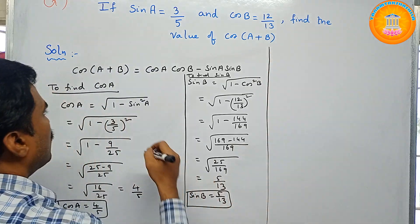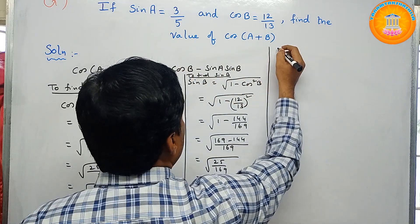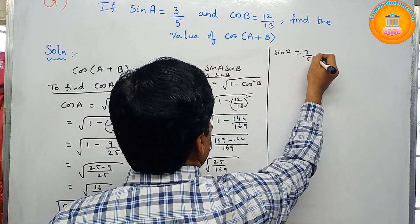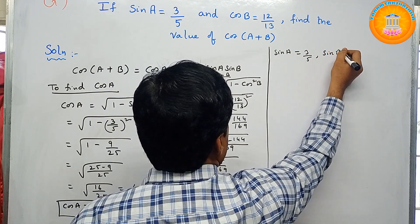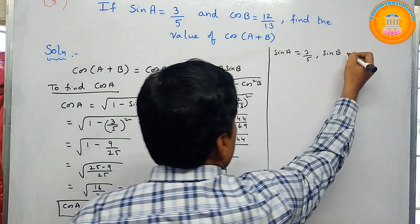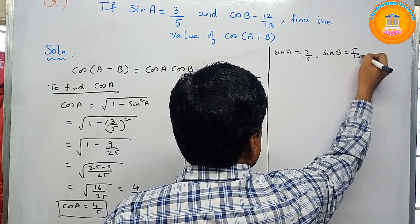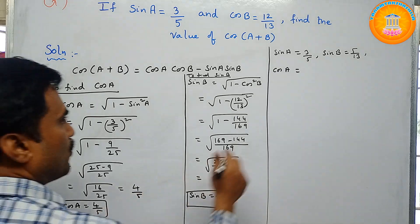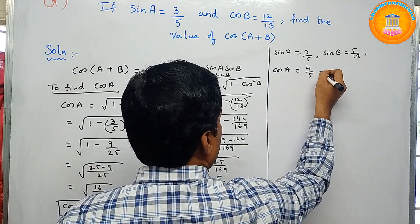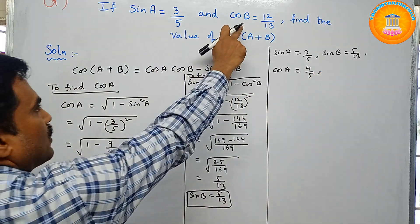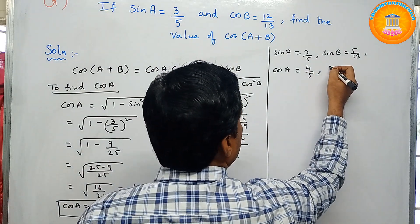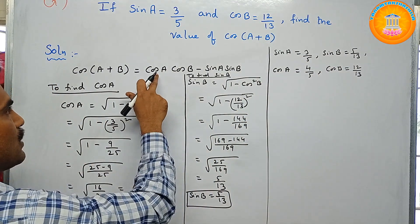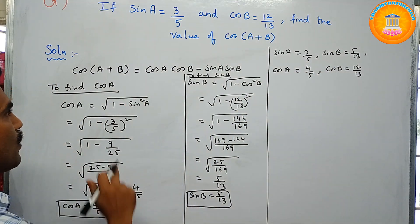Now we know all the required values: sin a equals 3 by 5 (given), sin b equals 5 by 13 (just found), cos a equals 4 by 5 (just found), and cos b equals 12 by 13 (given in the problem). Now substitute all these values into the right-hand side of the formula for cos of a plus b.